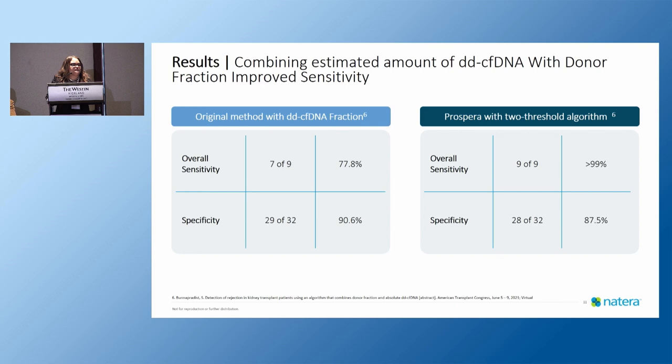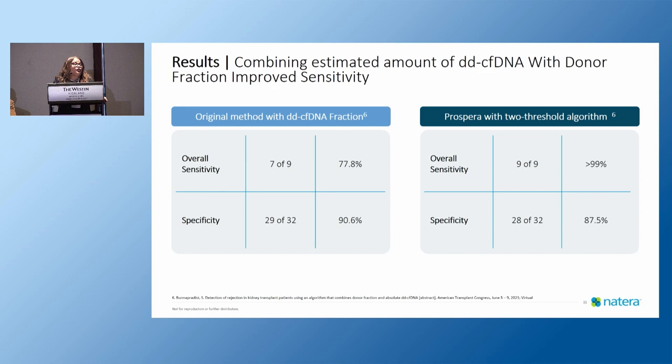The specificity decreases slightly from 90.6% to 87.5%, but from the standpoint of quality of the test, having a better positive predictive value, the utilization of these two metrics improves the quality of the test for evaluation of the risk of rejection. Let's now present a couple of cases.